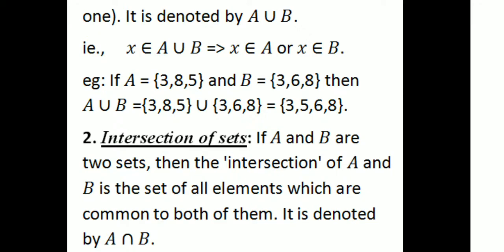That is, X belongs to A union B, which means X belongs to A or X belongs to B. For example, if set A equals the set of all {3, 8, 5} and set B equals the set of all {3, 6, 8}, then A union B equals {3, 5, 6, 8}.